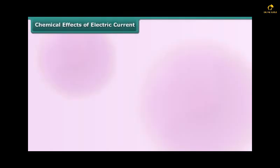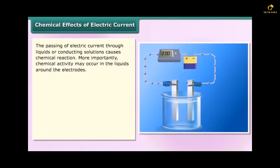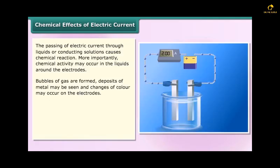Chemical effects of electric current: The passing of electric current through liquids or conducting solutions causes chemical reactions. More importantly, chemical activity may occur in the liquids around the electrodes. Bubbles of gas are formed, deposits of metal may be seen, and changes of color may occur on the electrodes.